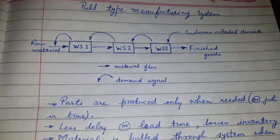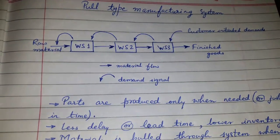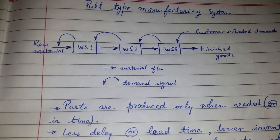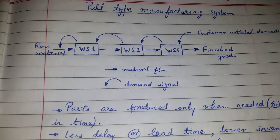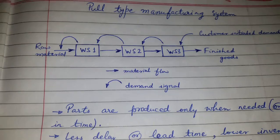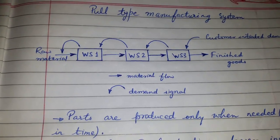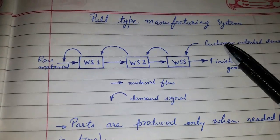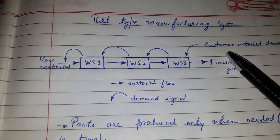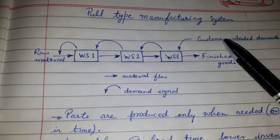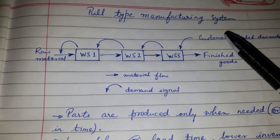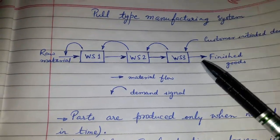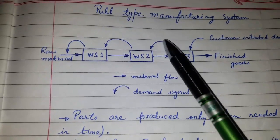Today's topic of discussion is pull type manufacturing system and push type manufacturing system. It is a very easy concept to understand. The main driving factor or the difference is that the pull type manufacturing system is customer-initiated demand — when there is a demand generated for the finished good, that message is sent down the line.